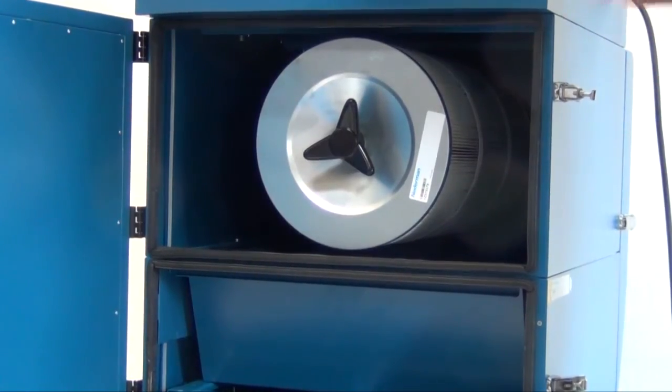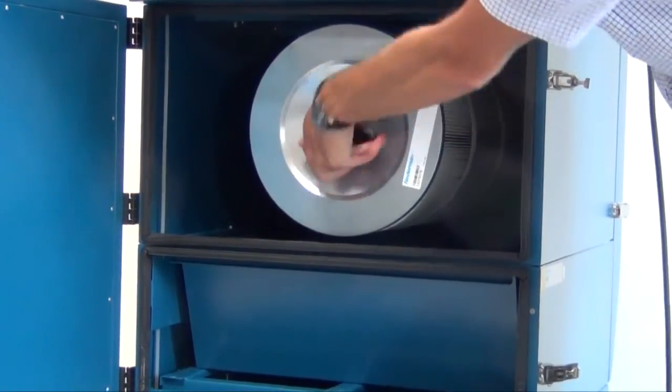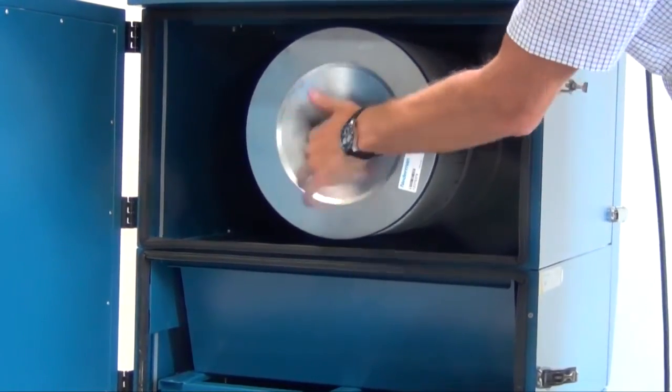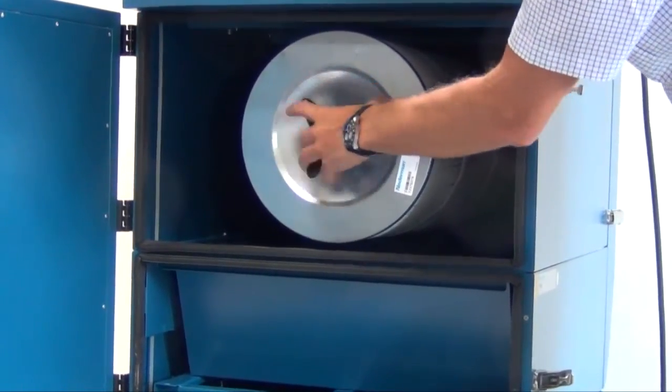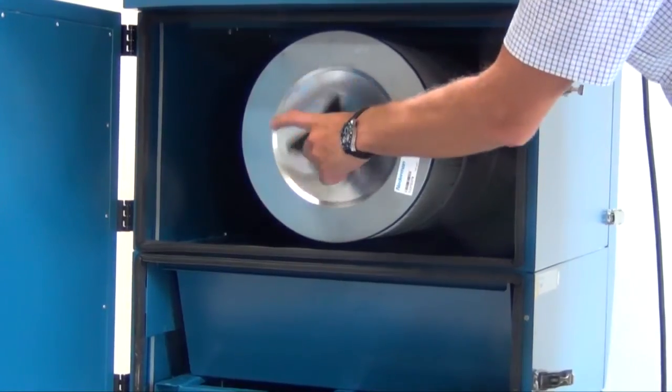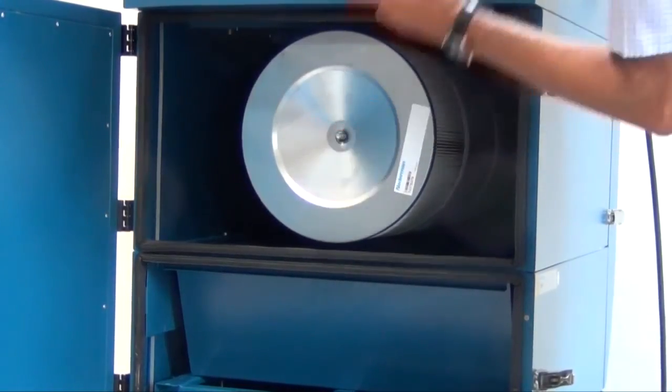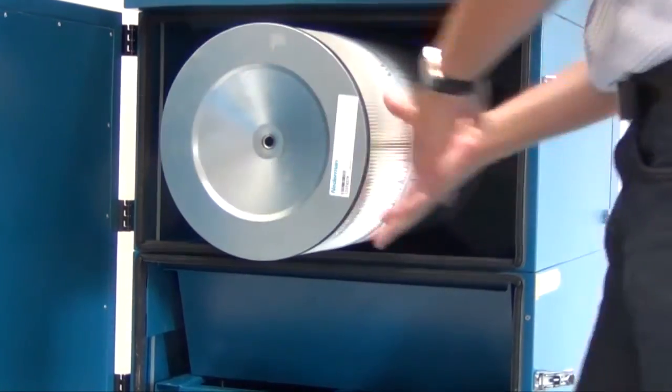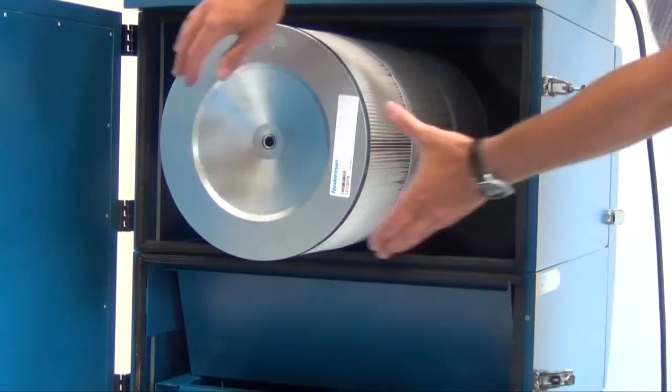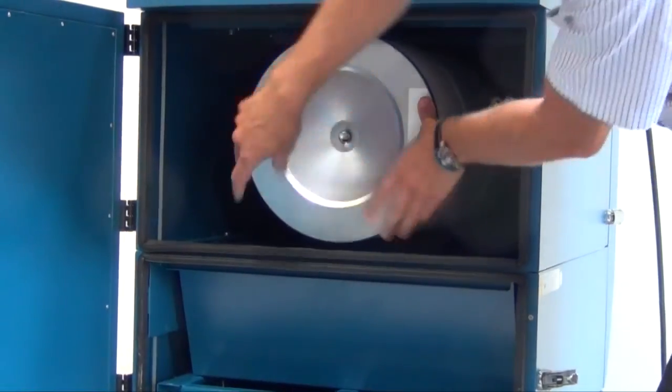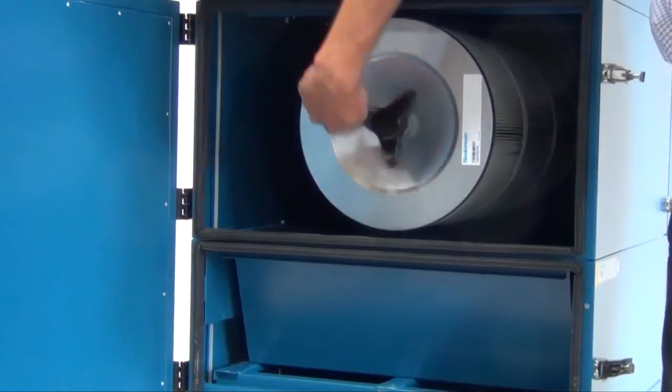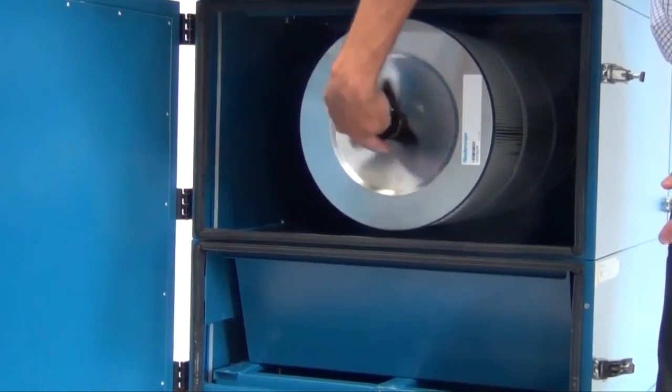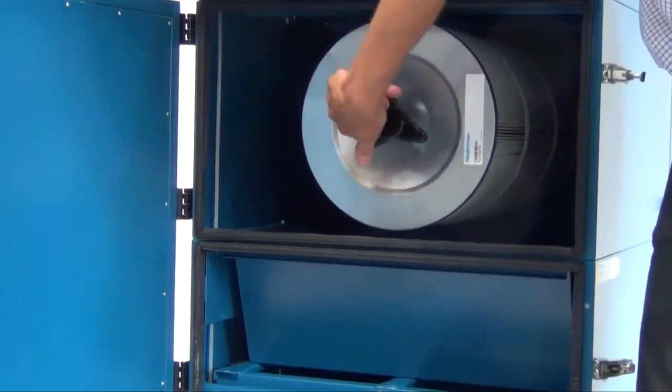When you need to replace the cartridge, you simply release this knob like that, pull out the filter, and install it like that. Tighten here.